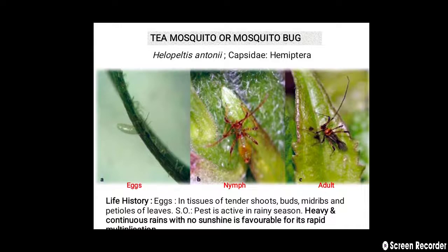Here we can see the different life stages of the tea mosquito bug — eggs, nymph, and adult. Regarding life history, oviposition takes place in tissues of tender shoots, buds, mid-ribs, and petioles of the leaves. Heavy and continuous rain with no sunshine is favorable for its rapid multiplication.